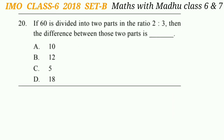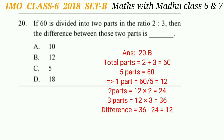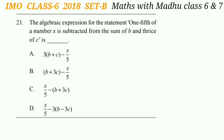Question 20: If 60 is divided into 2 parts in the ratio 2:3, find the difference between those 2 parts. With ratio 2:3, two parts plus three parts equals 60, so 5 parts equals 60, giving 1 part = 12. Two parts = 24, three parts = 36. The difference is 36 - 24 = 12. The answer is option B.